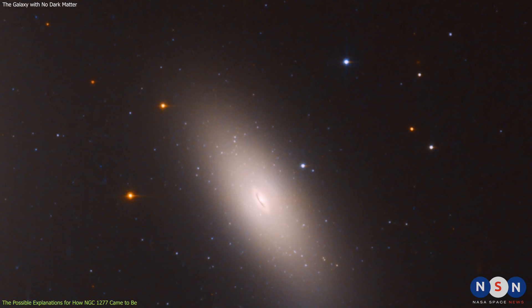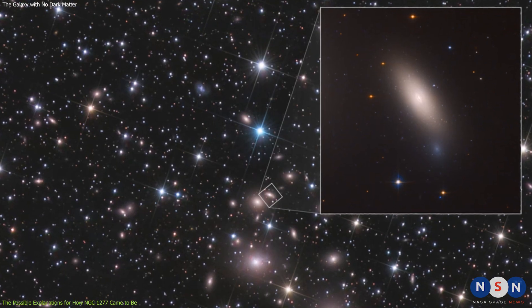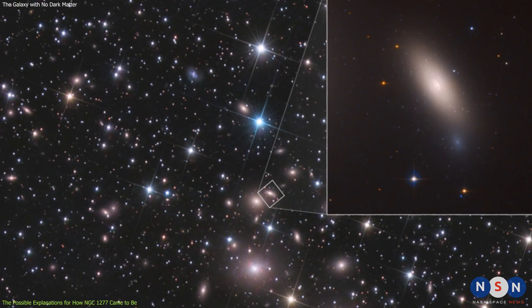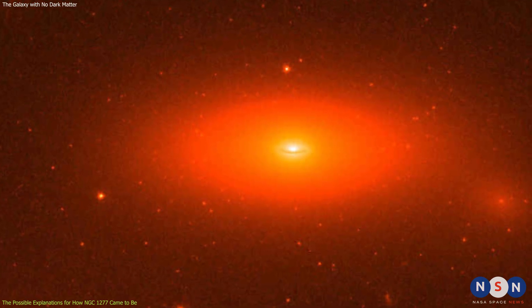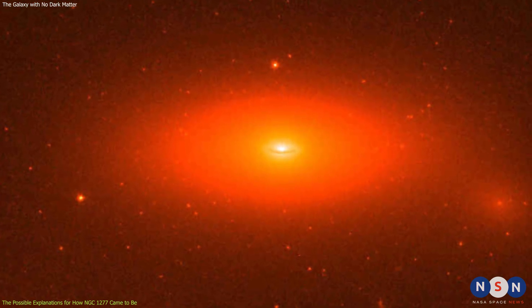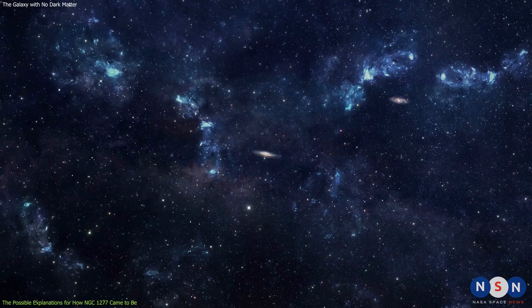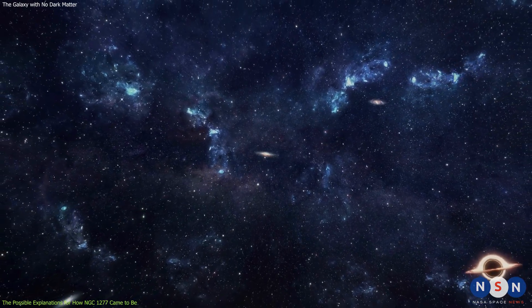This scenario seems more plausible for NGC 1277, because it can explain why it is so small and dense compared to other galaxies in its cluster. It can also explain why it stopped forming stars long ago, because it used up all its gas in a short burst of star formation. However, this scenario also has some problems.